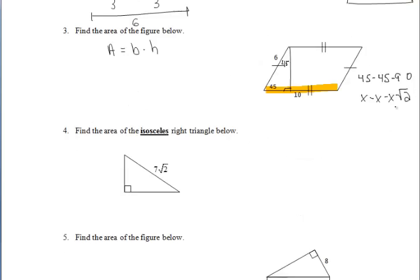For number 3, we want to find the area of the parallelogram. Drawing in our height, we create a 45, 45, 90 triangle. We know the side across from the 90 degree angle is 6. So that's our x radical 2.